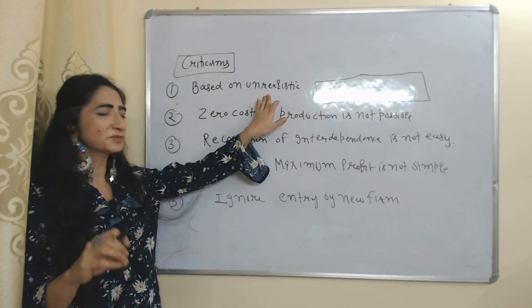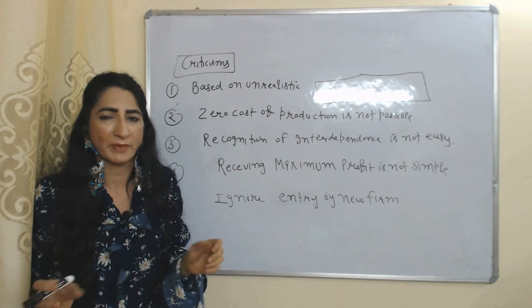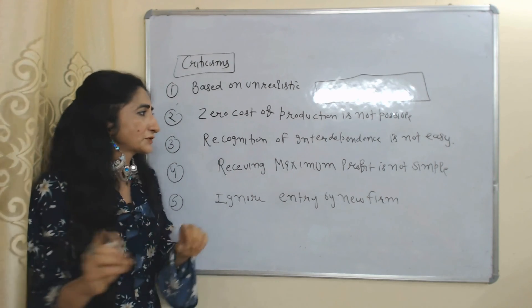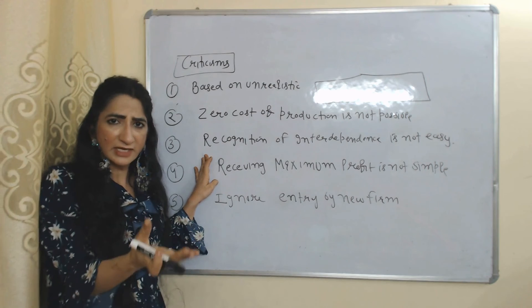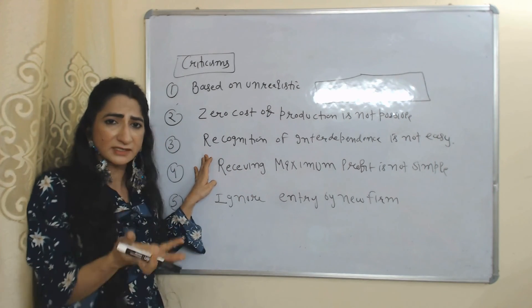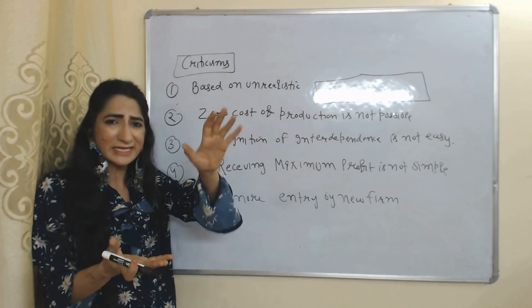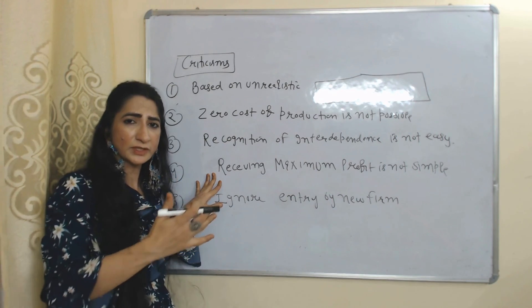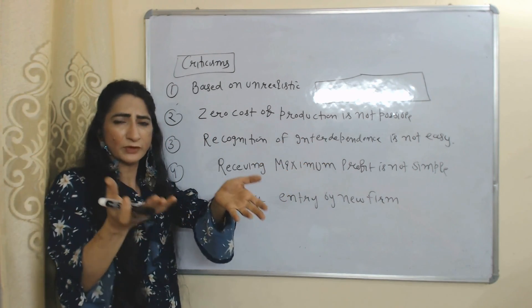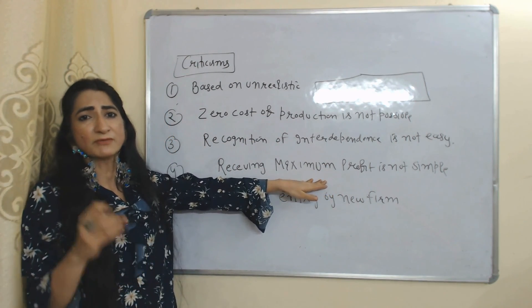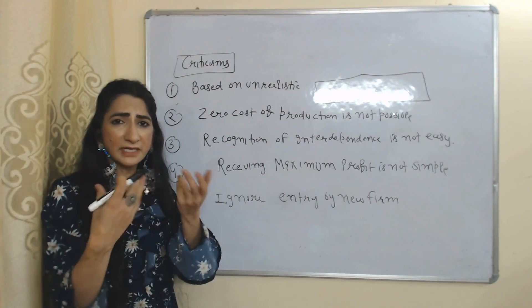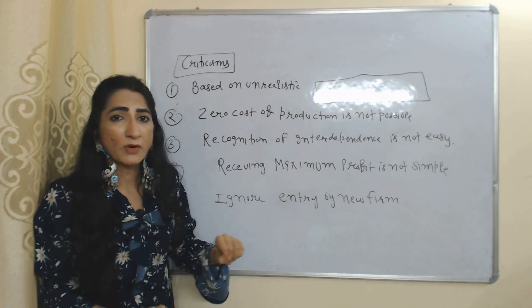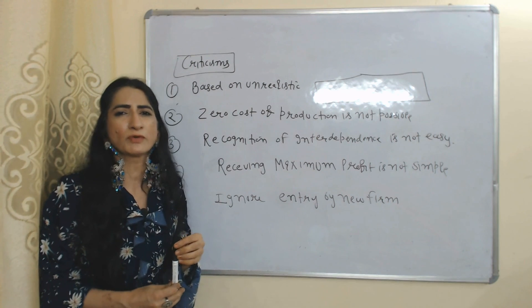Now we will see criticisms. This model is based on unrealistic assumptions like equal size of firms, but in reality equal size is not possible. It assumes zero cost of production, but in reality production is not possible at zero cost. Recognition of interdependence is not so easy — many factors must be considered, but this model ignores them. Also, earning maximum profit is not so simple; consumer demand must be considered, but this model completely ignores it. Finally, this model assumes no new firm can enter the market, but in reality this is not possible. So this is all about Chamberlain's oligopoly model. Thank you so much for watching. Bye, take care.